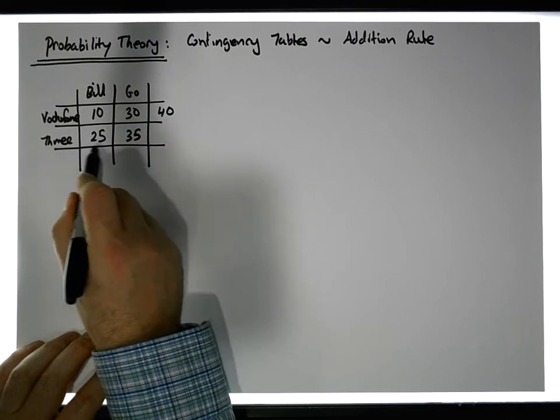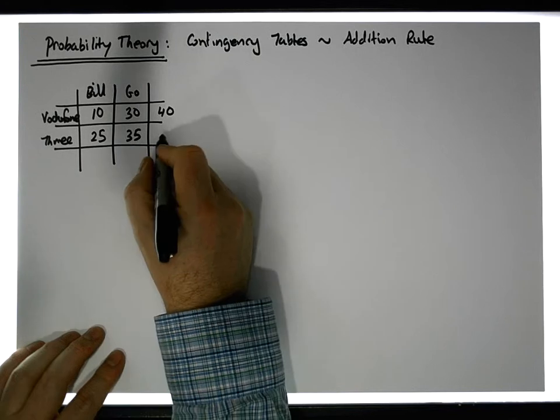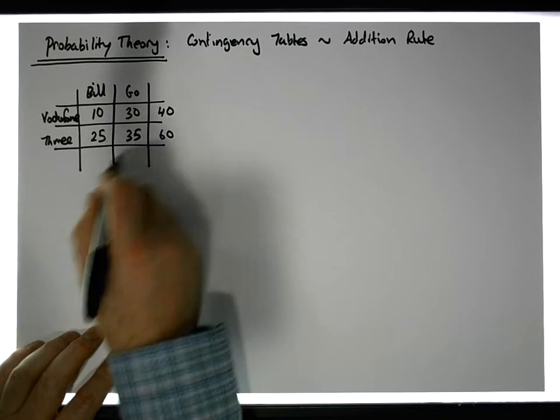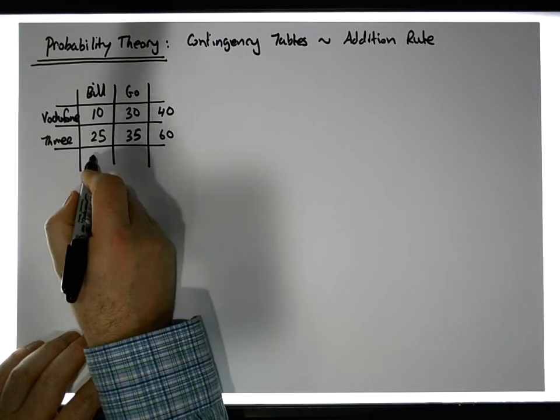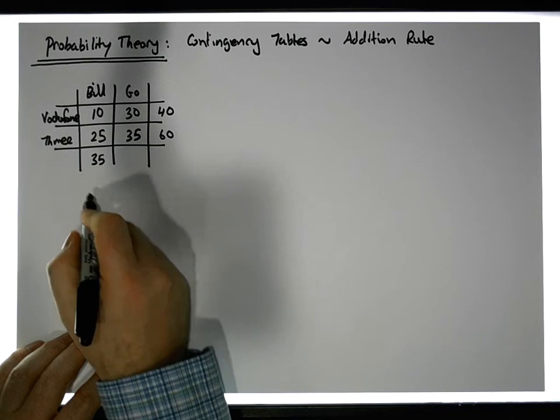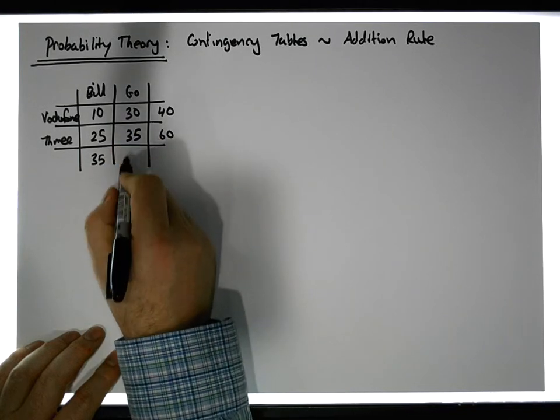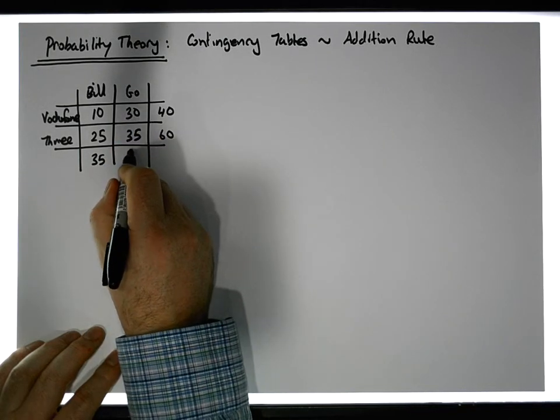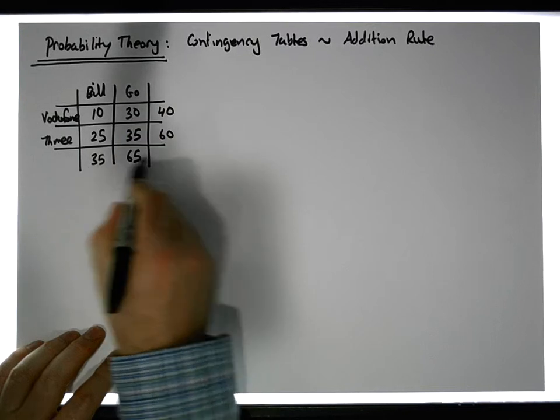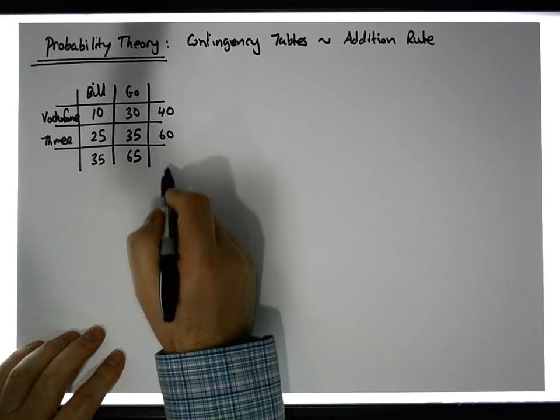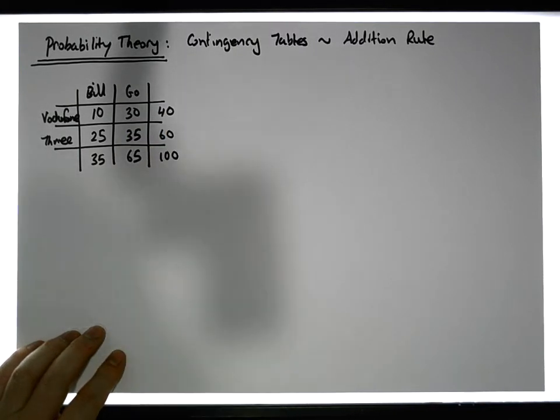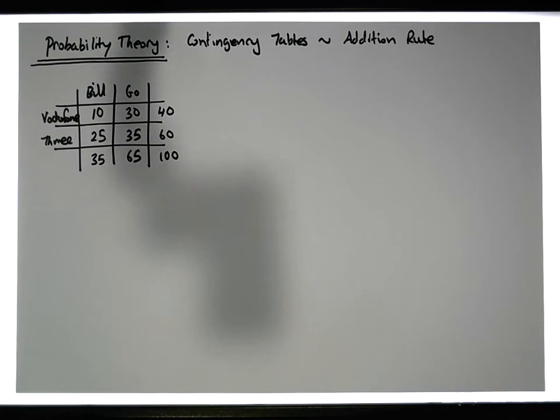Given our marginal totals: 10 and 30 gives us 40 Vodafone responses, 25 and 35 gives us 60 Three responses. For bill pay we have 10 and 25 giving us 35 responses, and 30 and 35 gives us 65 go responses, giving a total of 100 people. We asked 100 people these two questions.